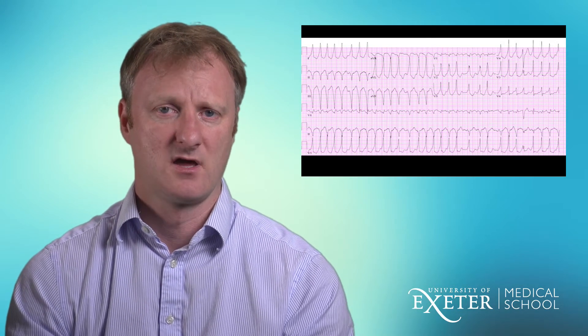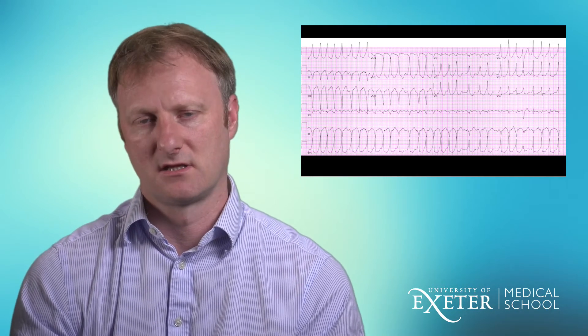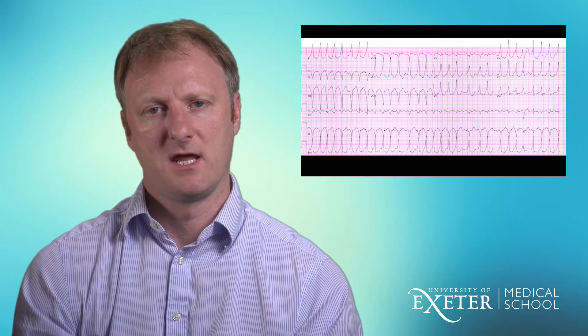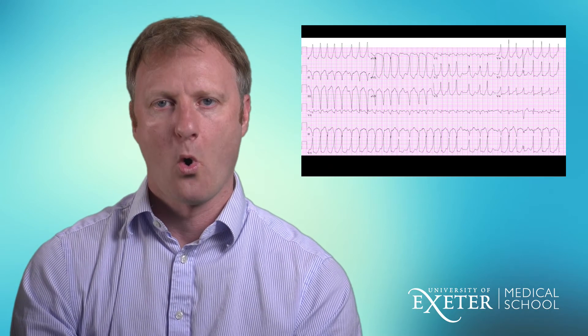This is a very important ECG to recognise: pre-excited atrial fibrillation — a combination of AF plus an accessory pathway. The key features are the irregular rhythm and the changing QRS morphology. The morphology changes because when the AV node is tired, the AF conducts to the ventricle through the pathway, and when the pathway is tired it conducts through the AV node, or a combination of both. Hence the high rates can be achieved and maintained, which is very dangerous.